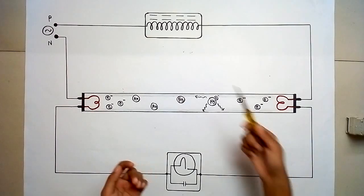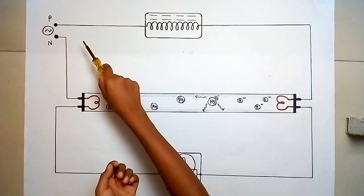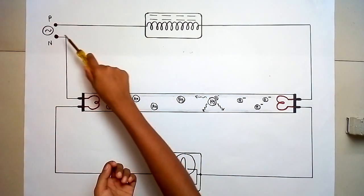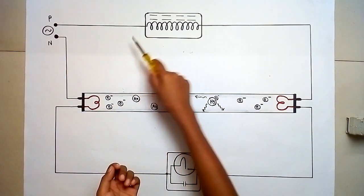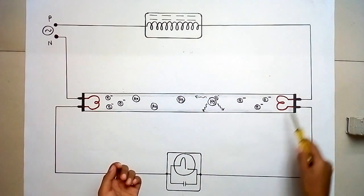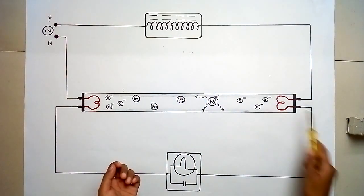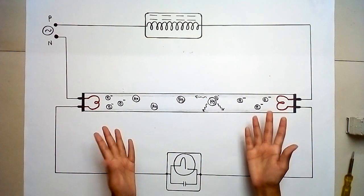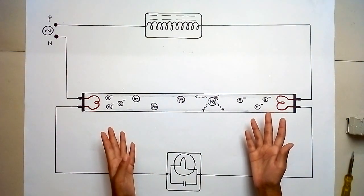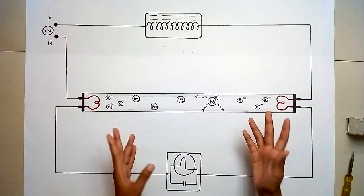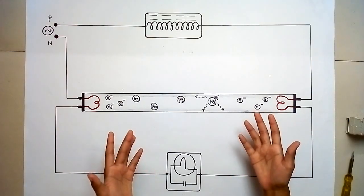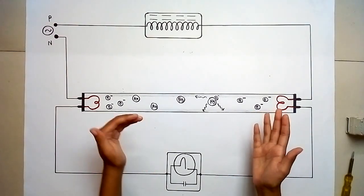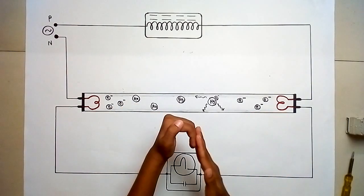As the AC voltage of 50 or 60 hertz frequency flows through the phase wire to the magnetic ballast, to the fluorescent lamp, and to the starter, a glow discharge is established in the starter which heats up the bimetallic contacts and makes them come in contact with each other, therefore closing the circuit.